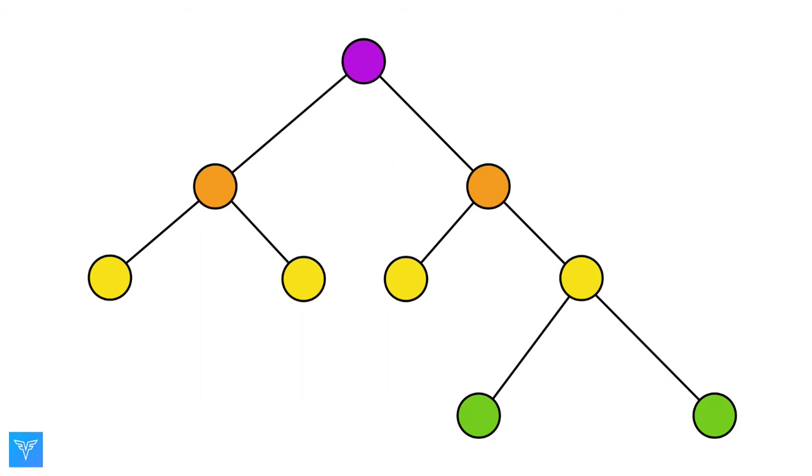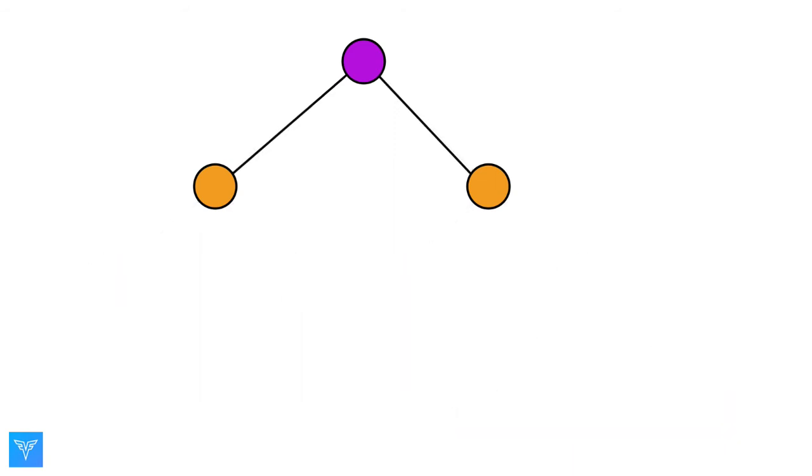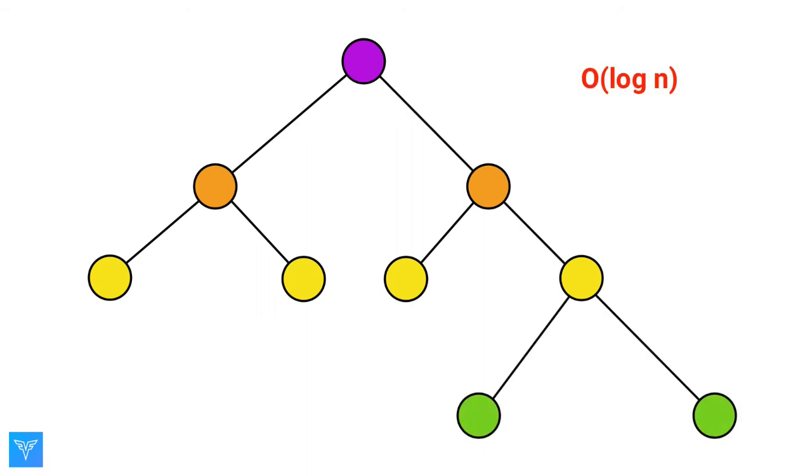Why are trees so useful? They're very memory efficient. They can also grow to hold an arbitrary number of objects. A balanced sorted tree with n items only has a depth of order log n. This makes implementing an order log n search a cinch.